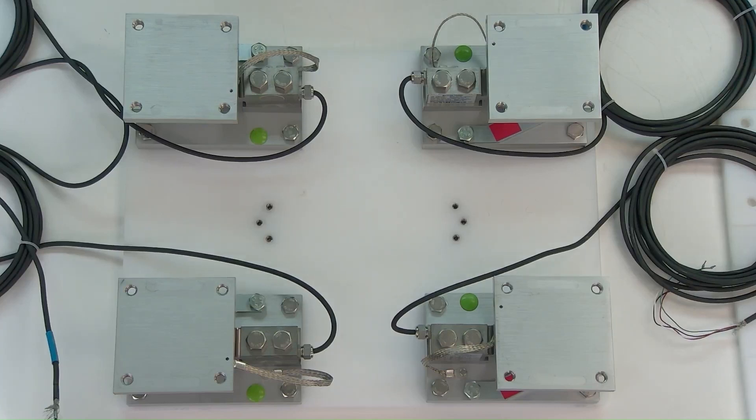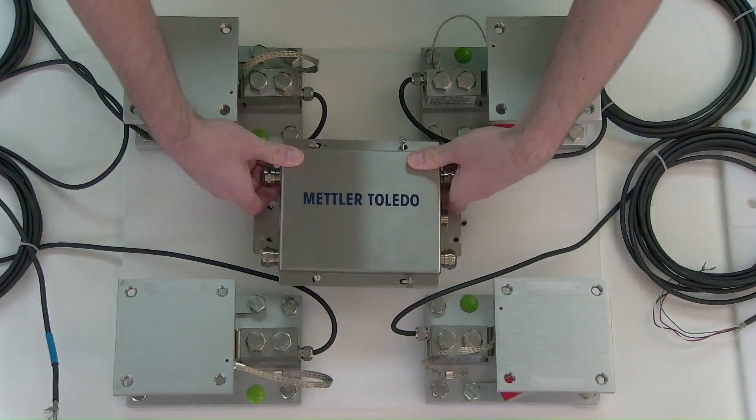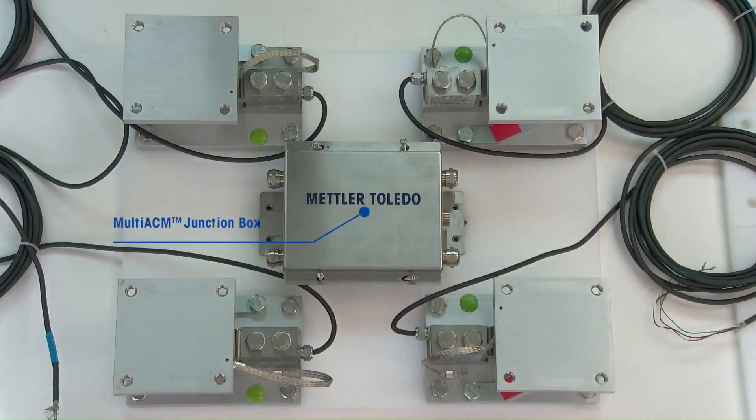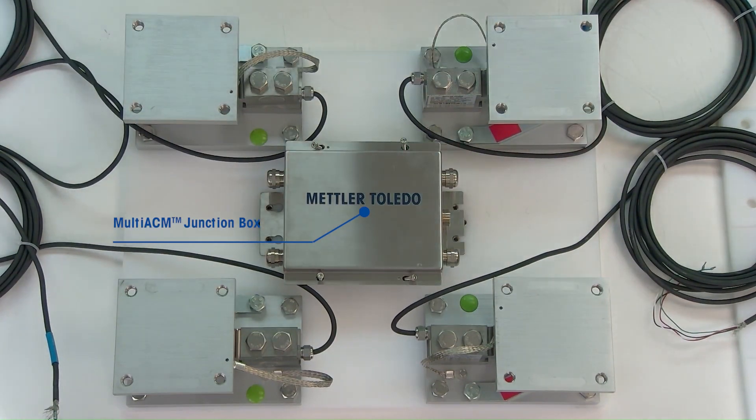Here you can see our load cells and weigh modules are already in place. We're going to bring in the multi-ACM junction box. We can place it here, and I'm going to screw this down to secure it before we do any wiring.